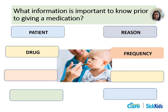For example, three times a day or every eight hours. Fifth, the right dose — it is important to give the correct amount of medication. Sixth, the right time — you want to ensure it is the correct time of day for the medication. The right time differs from frequency: frequency includes how often the medication is given, while the time is the specific time of the day.